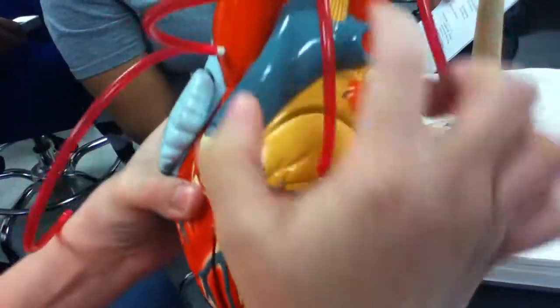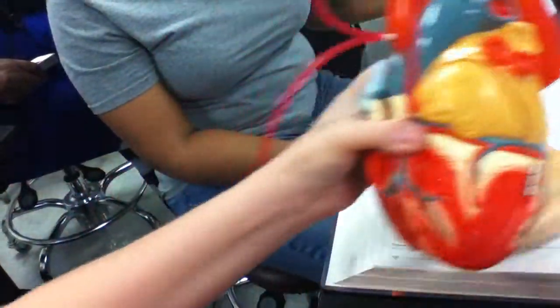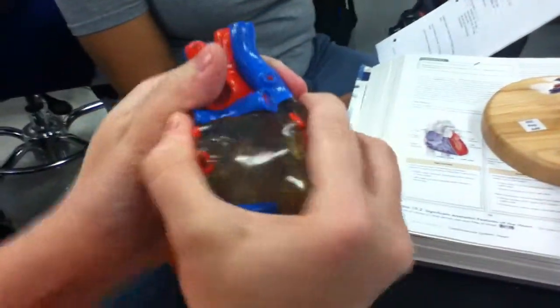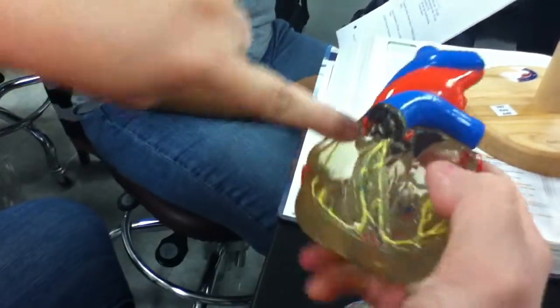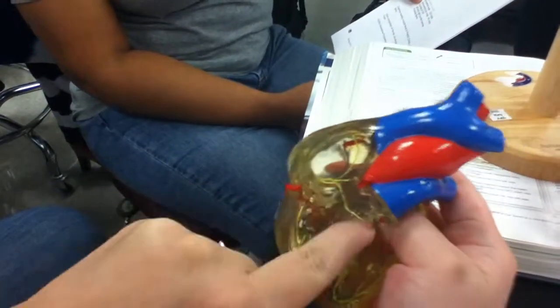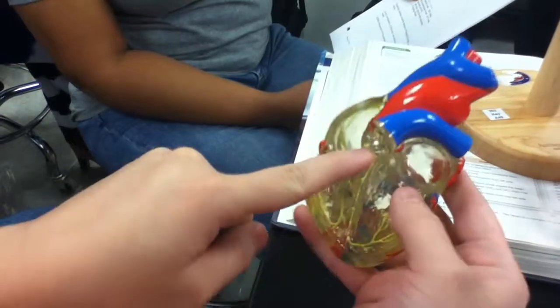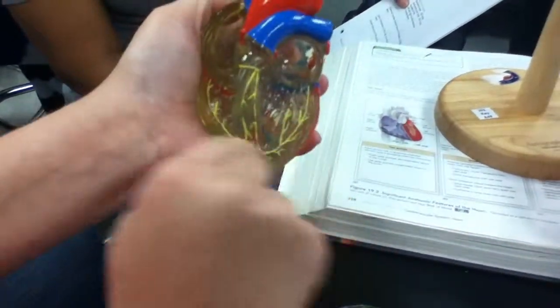The ligamentum arteriosum is here, that connects the aorta and the pulmonary trunk. And then the conducting fibers: this is the SA node, the sinoatrial node. The atrioventricular node is here. The bundle of His is here. The left and right bundle branches are here. And the Purkinje fibers are around the apex of the heart.